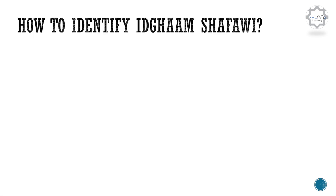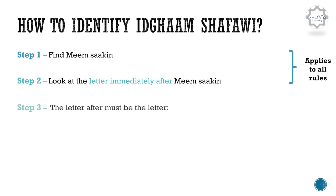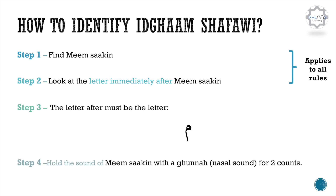So how do we identify Idhgam Shafawi? Step 1: Find Mim Saakina. Step 2: Look at the letter immediately after Mim Saakina — this applies to all the rules. Step 3: The letter after must be the letter Mim.